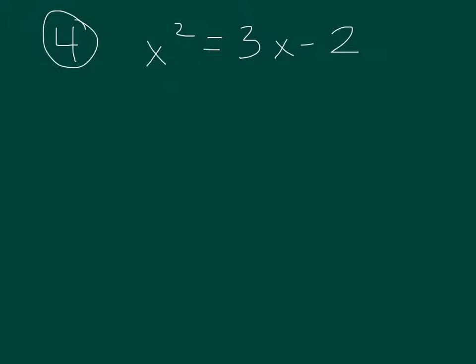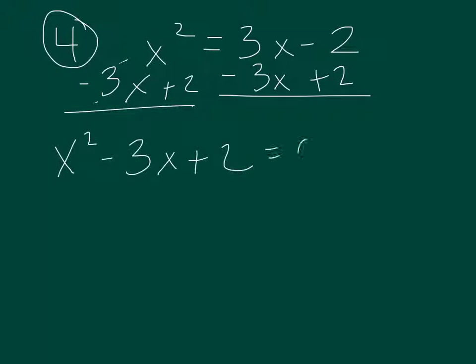Last one, again, it's still not equal to 0. So to make it equal to 0, we would need to subtract the 3x and add the 2. So over here you have x squared still. But you need to subtract 3x and add 2. So we get our x squared minus 3x plus 2 equals 0.